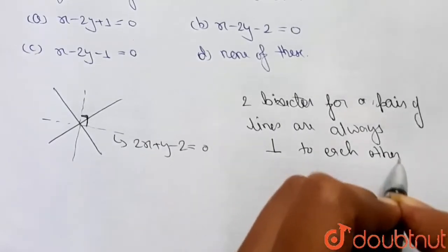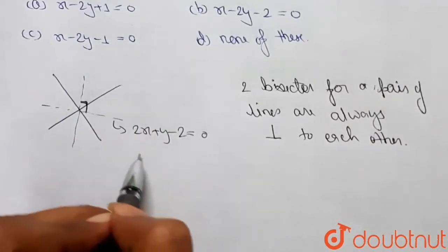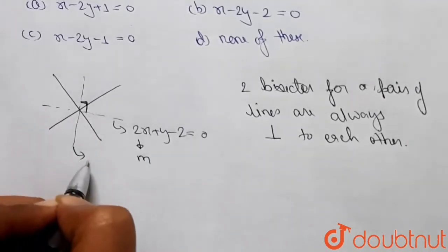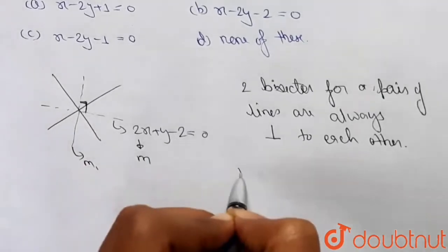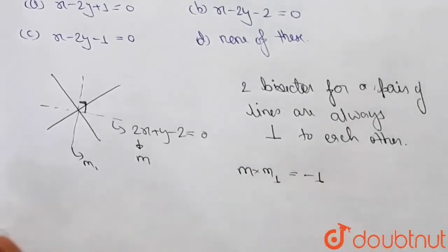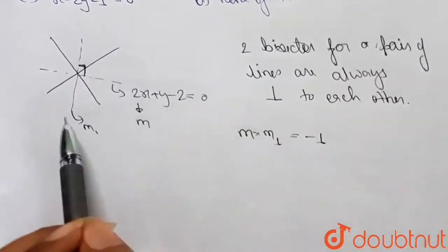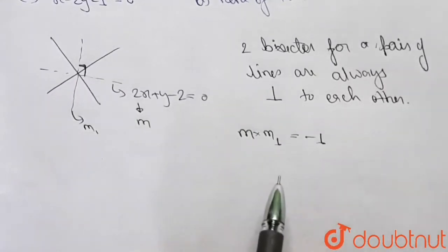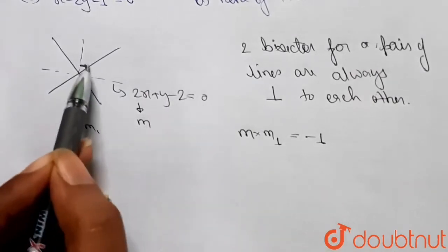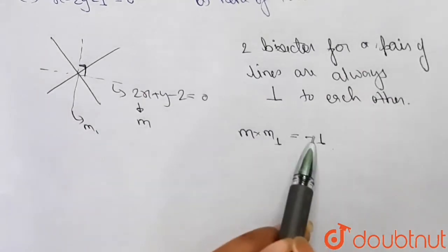From here, if the slope of the unknown bisector is m and the slope of the given angle bisector is m1, then the product of m and m1 should be equal to -1, because whenever two lines are perpendicular to each other, the product of their slopes is always equal to -1.